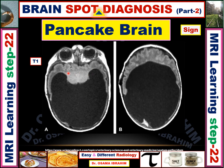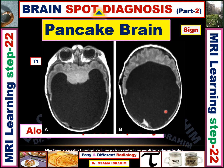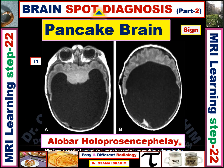The pancake sign is represented due to fusion of the cerebral hemispheres on both sides. There is no inter-hemispheric fissure as you can see, and also the ventricles have no septum pellucidum or midline structures. The ventricles are fused together to form a monoventricle. This pancake appearance is called the pancake sign. In the pediatric age group, the pancake sign represents alobar holoprosencephaly, appearing as a pancake brain due to fusion of the cerebral hemispheres and ventricles.